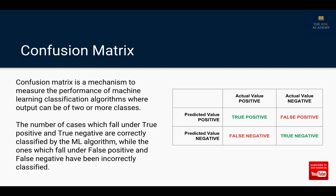The number of cases which fall under true positive and true negative are correctly classified by the machine learning algorithm, while the ones which fall under false positive and false negative have been incorrectly classified.